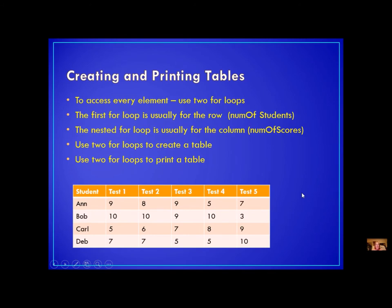In the last lesson we talked about creating and printing tables. We need to access every element when we create and print a table, and whenever we need to access every element, we use two for loops. The first for loop — the outside loop — is usually for the row, and we do a range up to the number of rows. The inside or nested loop is usually for the column; in our example, it was the number of scores. So you use two for loops to create a table and two for loops to print a table.